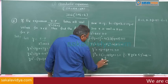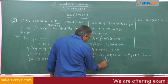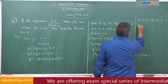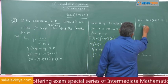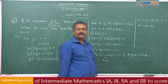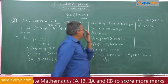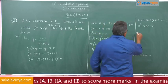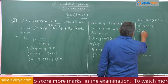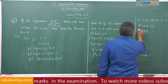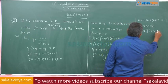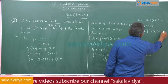Since roots are complex or equal to 0, D less than or equal to 0. That means B squared minus 4AC less than or equal to 0. So: 2(3 minus 2p) whole squared minus 4 times 1 times 1 less than or equal to 0.